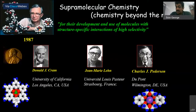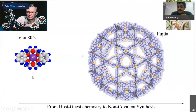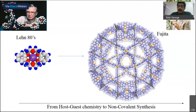Over the last three decades, supramolecular chemistry has evolved from simple host-guest chemistry to what we now call non-covalent synthesis. Scientists can program molecules to form even larger assemblies with function. For instance, from simple crown ethers we can now make molecular cages spanning multiple nanometers — such as those prepared by Fujita from Japan — which can serve as nano-confined reaction vessels. The message: supramolecular chemistry has evolved, and we can program molecular assemblies analogous to organic synthesis.